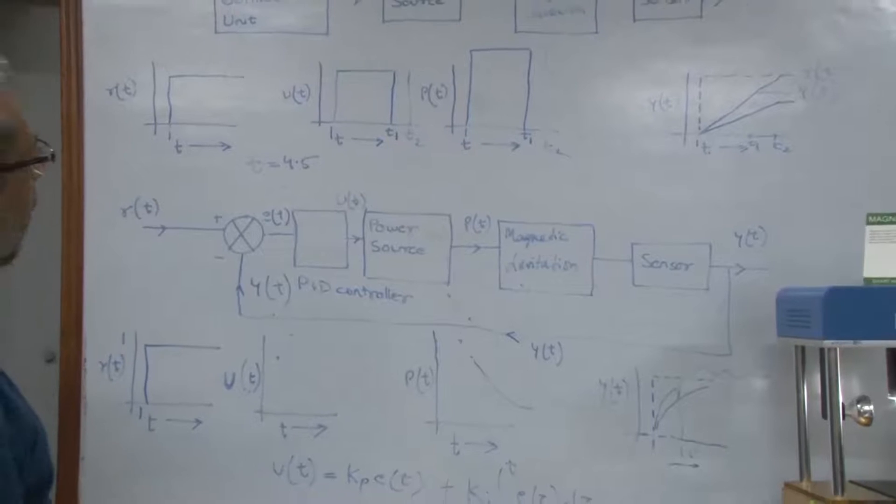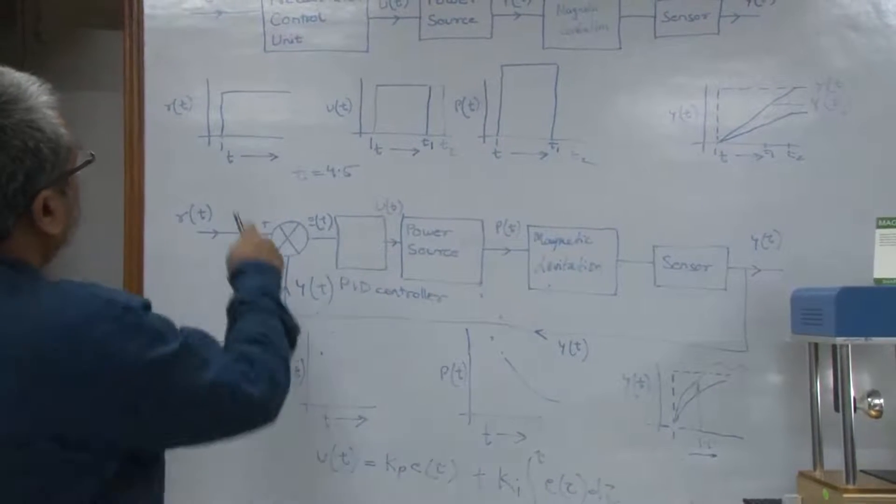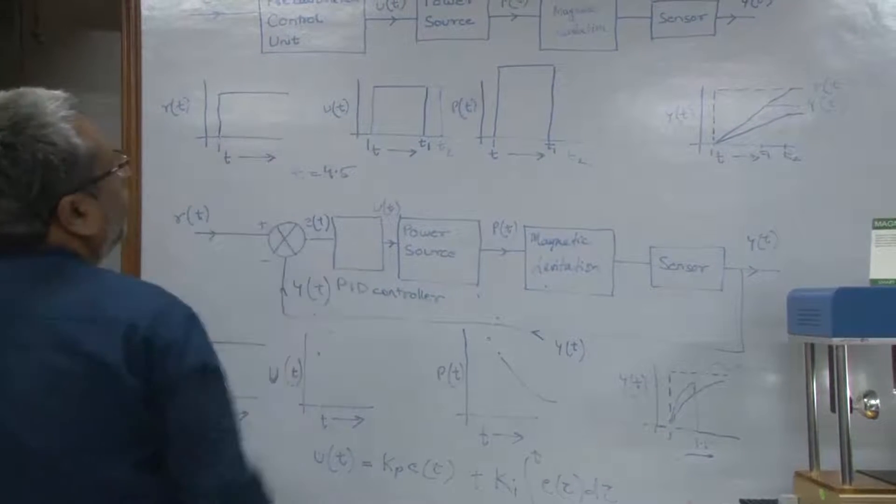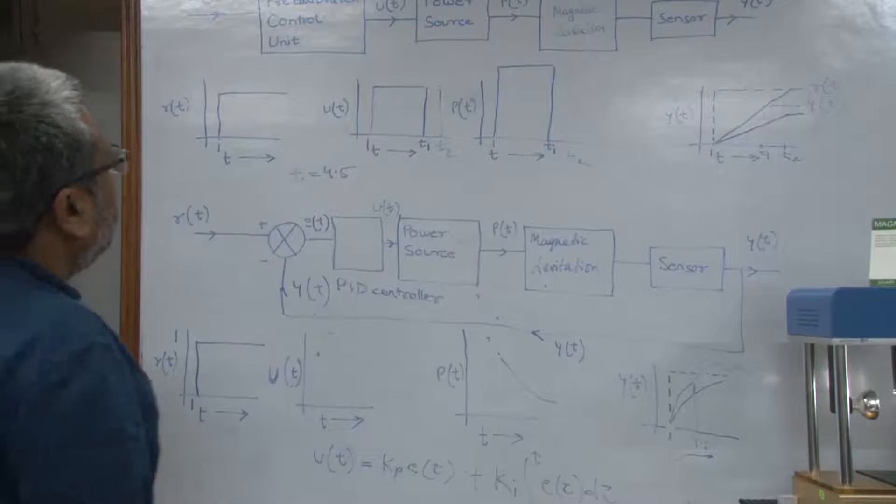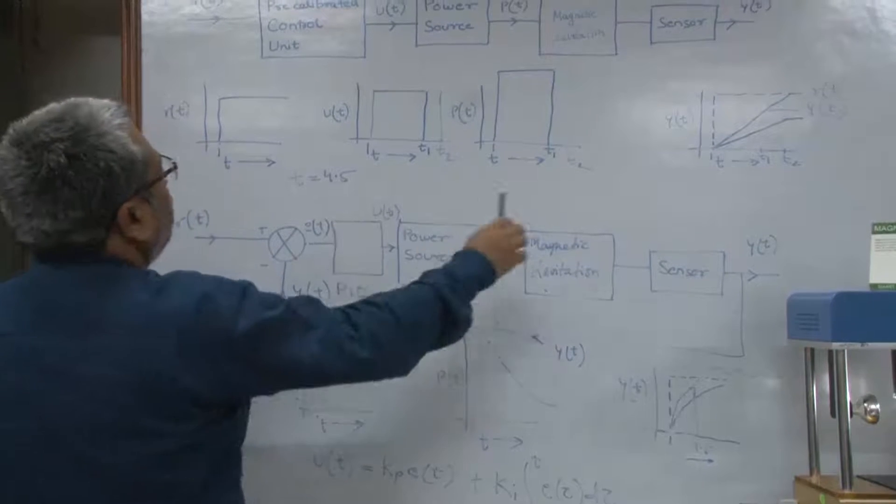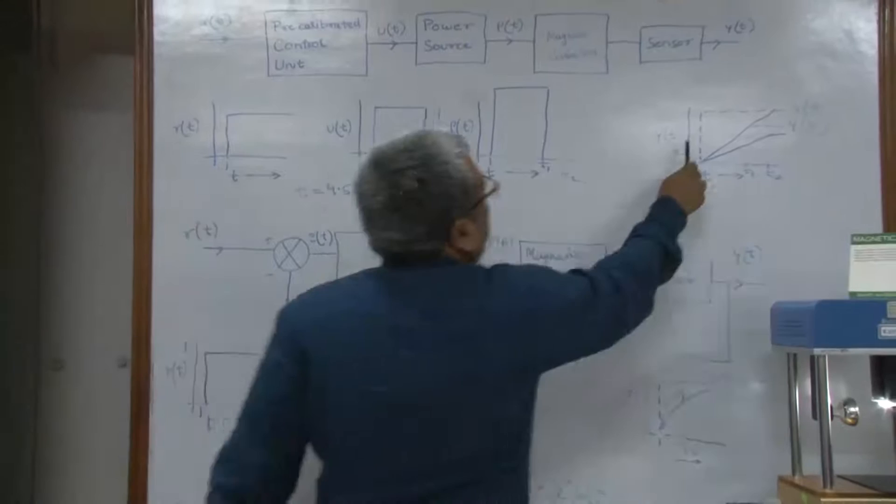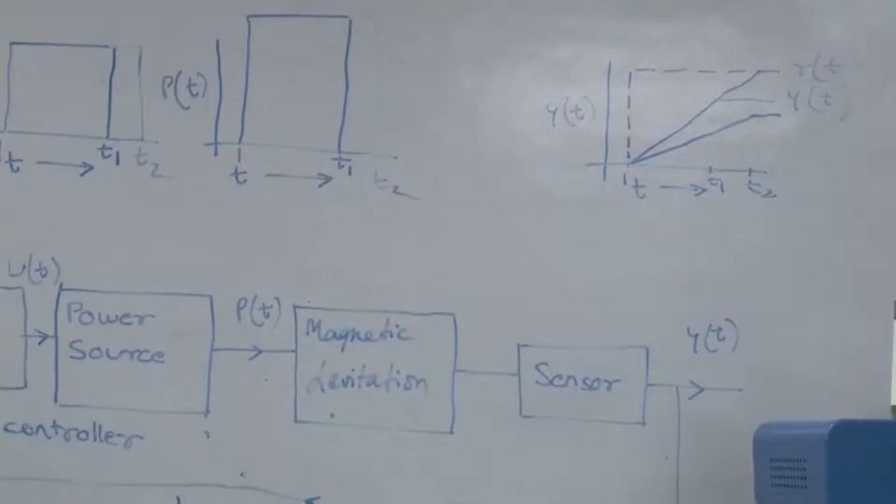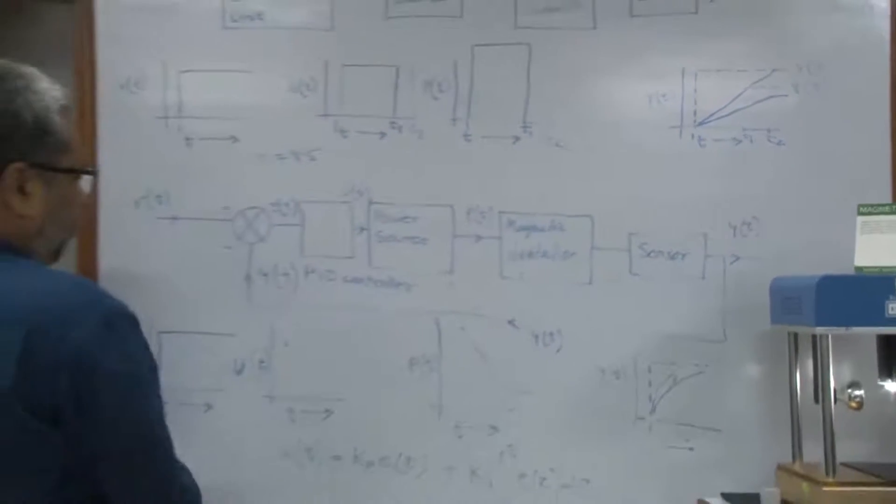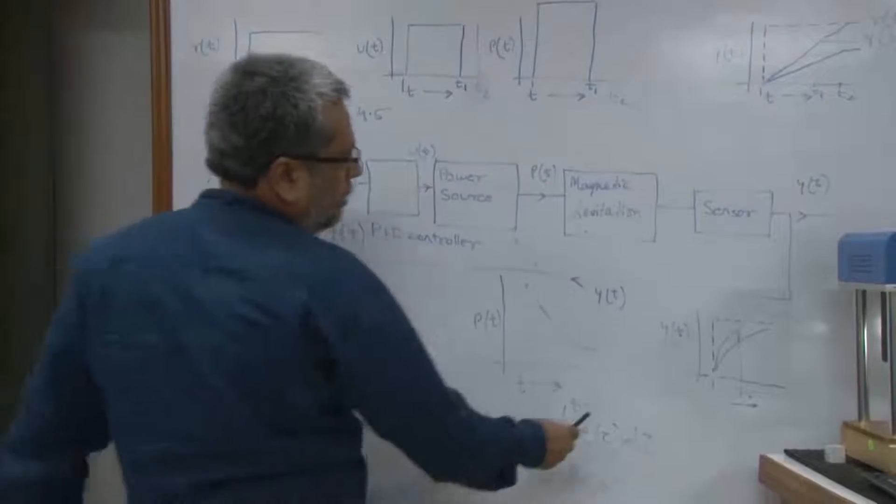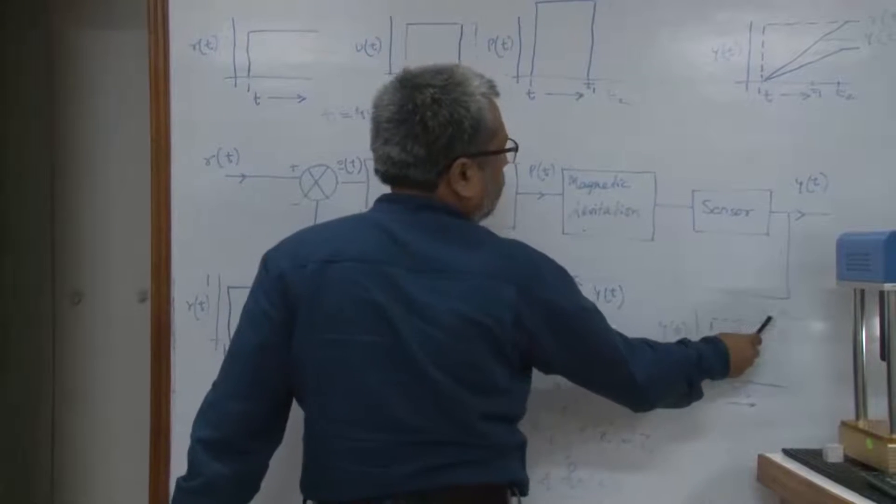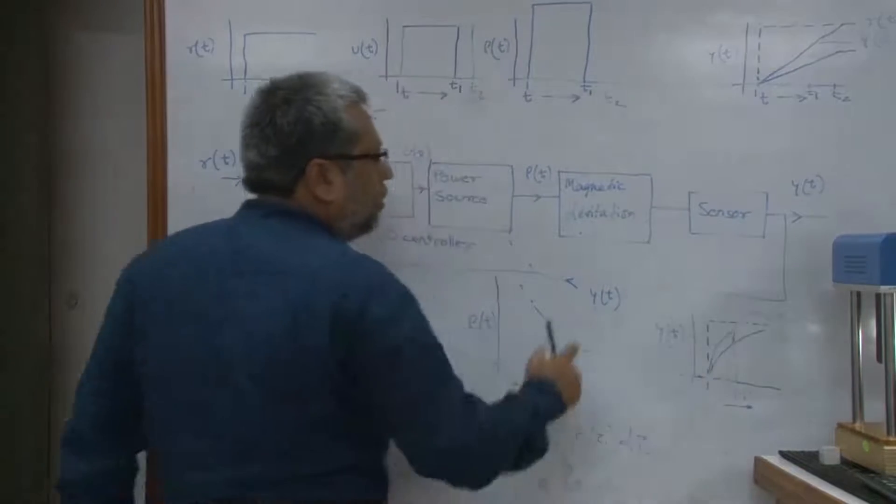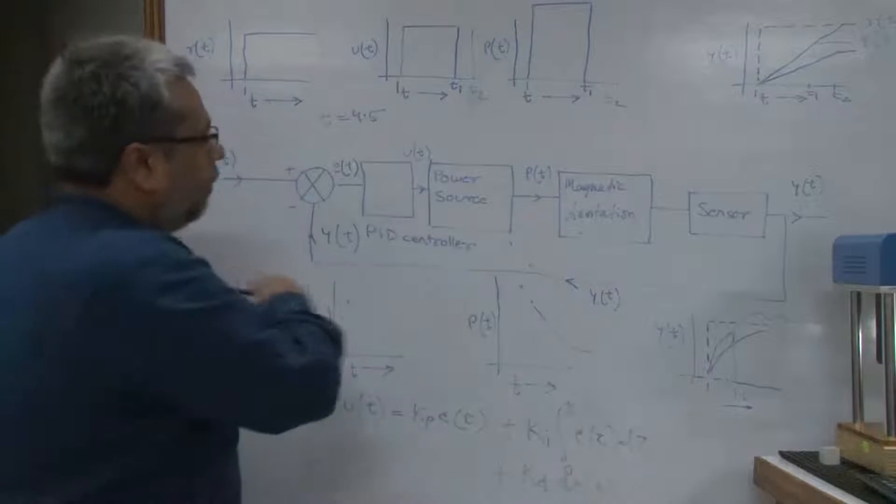So what is the advantage? In this case, for example, if I give an open loop system, I may have an output YT which may or may not follow the signal. Whereas in this case, if I give a closed loop signal, then we will see that after a certain point of time this system is going to follow that reference signal.